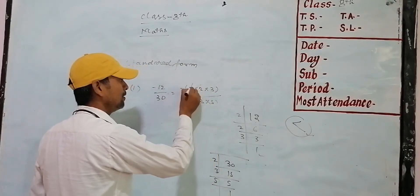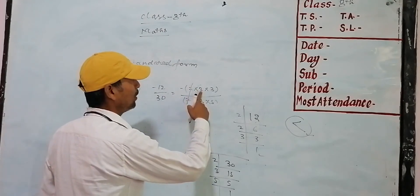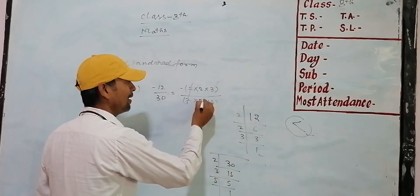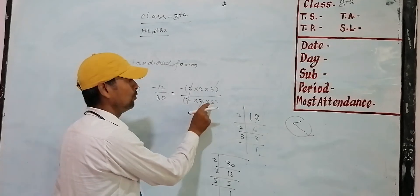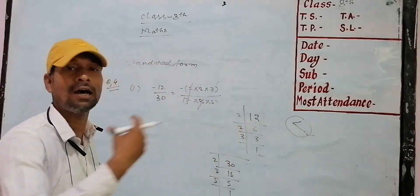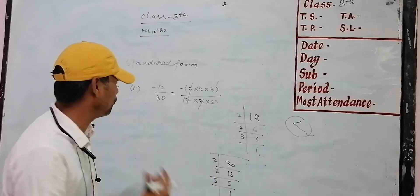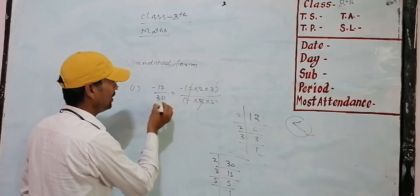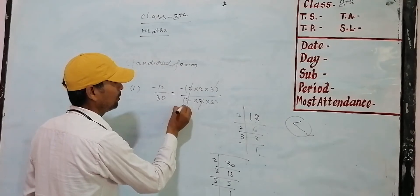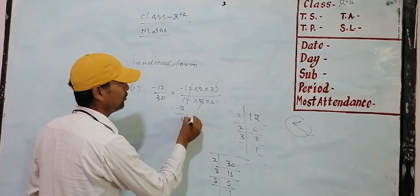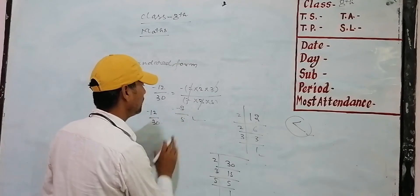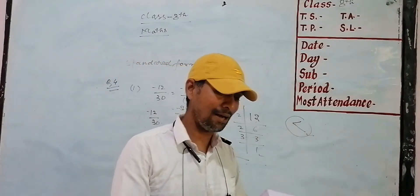You just have to manipulate your working. Don't repeat your work. We have not written our equivalent fraction correctly. We need to write two minus signs — the sign gives minus, and the other minus gives us a positive. So we write minus 12 by 13, equivalent to minus 2 by 5.